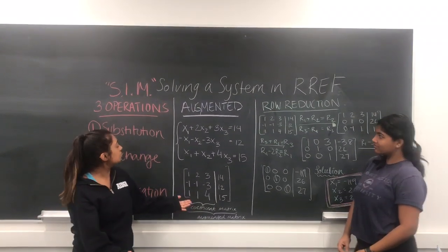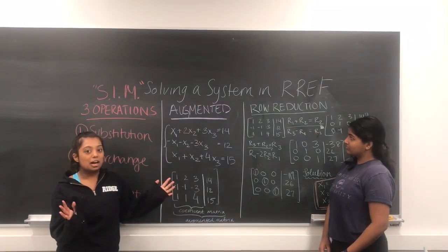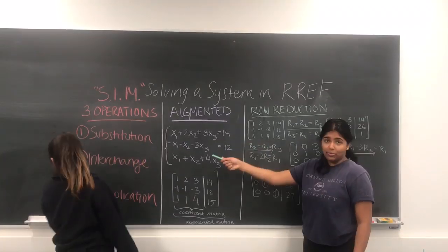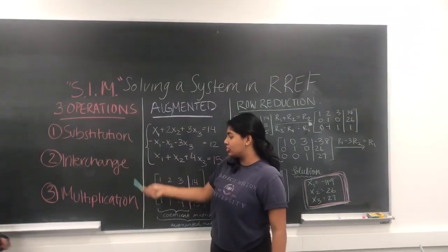And there are a couple of ways to do this, the main thing being through row operations. So there's basically three row operations: substitution, interchange, and multiplication.